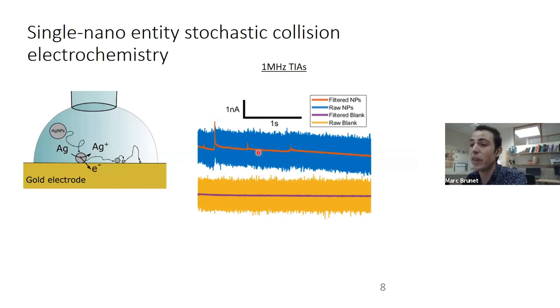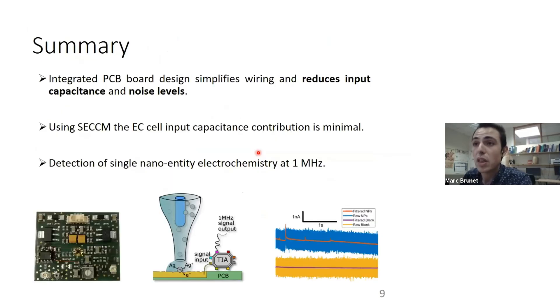This mechanism was reported recently by Professor Bard. We attribute this to just a small calibration difference that we have between the different current amplifiers that we use. To sum up, the integrated PCB board design simplifies the wires and reduces the input capacitance, which has a relevant effect on high bandwidth current amplifications. By the use of SECCM, the input capacitance contribution of the electrochemical cell is minimal, and this transimpedance amplifier allows us to detect single entities up to one megahertz.